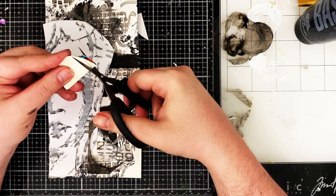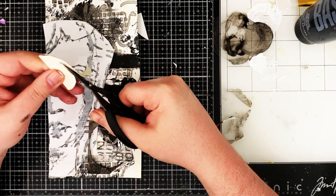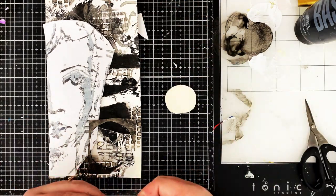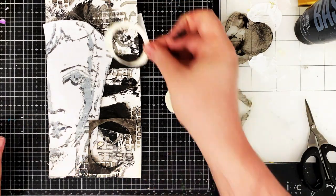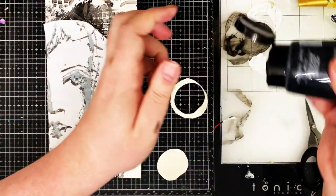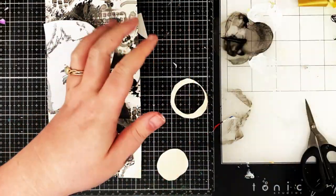They always look kind of wonky and I wish I could say that was deliberate, that's just because I can't cut anything straight. But that's exactly how I do it. I cut a circle, fold it in half, and then cut it again to whatever degree of thickness that I want the edge to be.